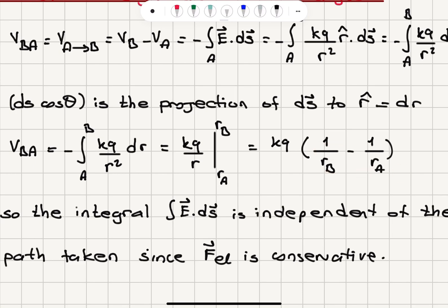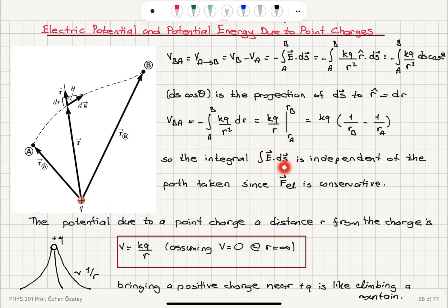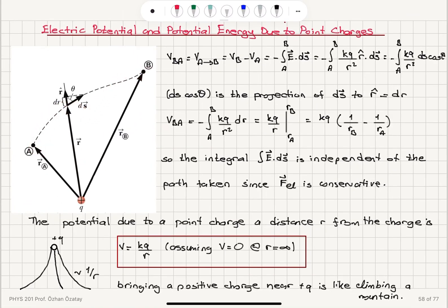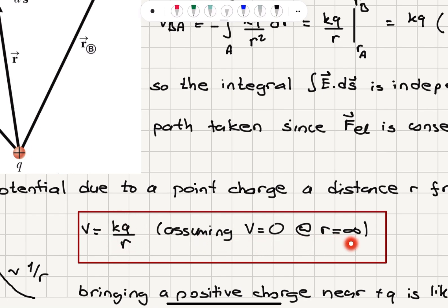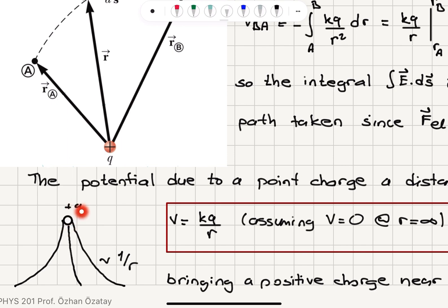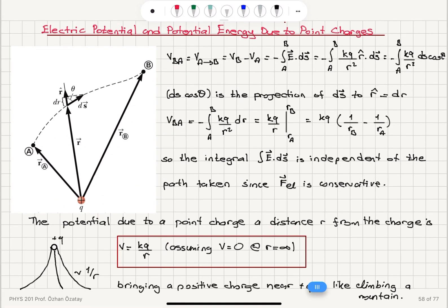So V_B minus V_A equals Kq times (1/R_B − 1/R_A). We see that the integral of E·ds is independent of the path taken, since the electrical force is conservative. The potential decreases as 1/R in three dimensions as we move away from the charge. Bringing a positive charge near this +Q is like climbing a mountain — you have to climb uphill to reach +Q.